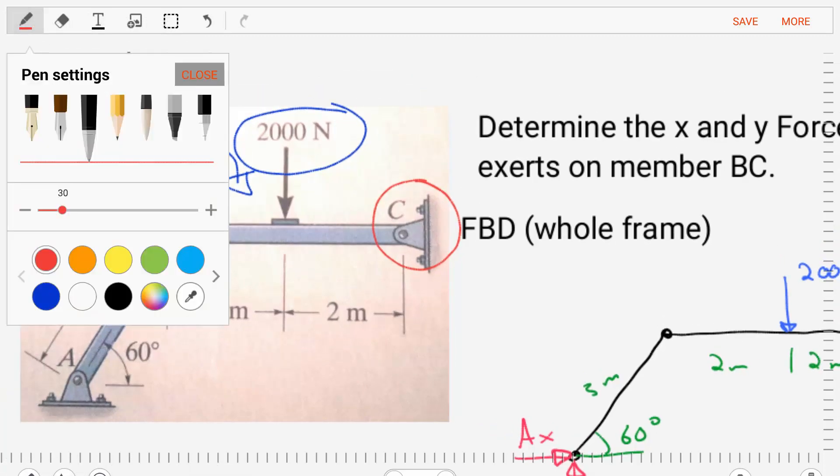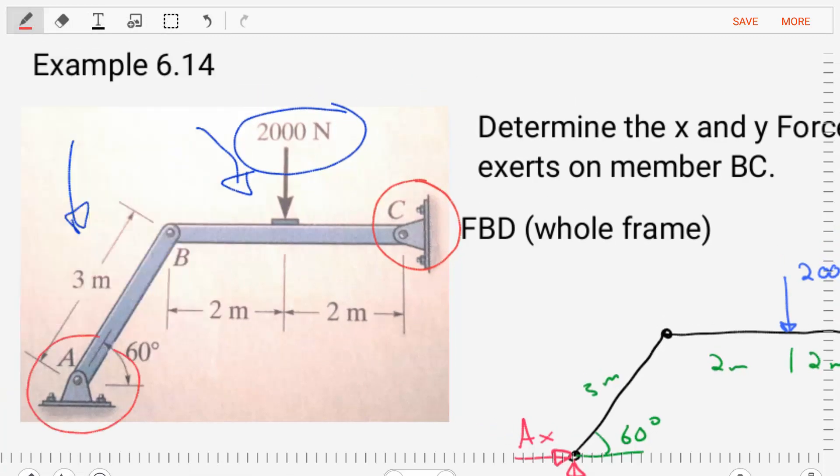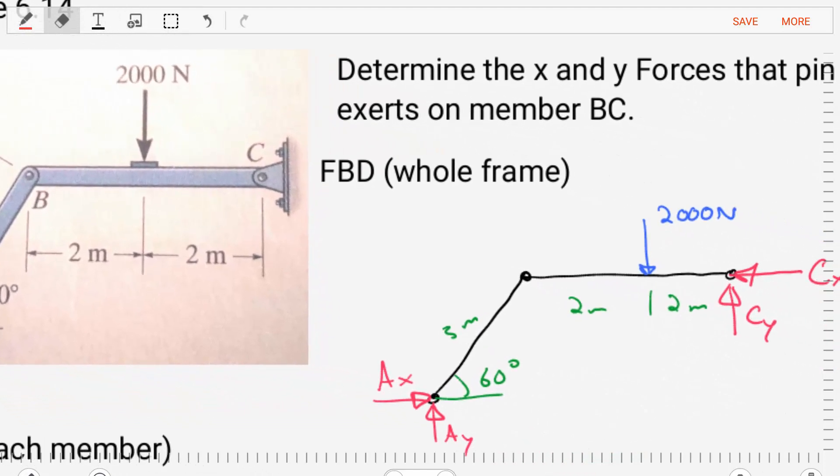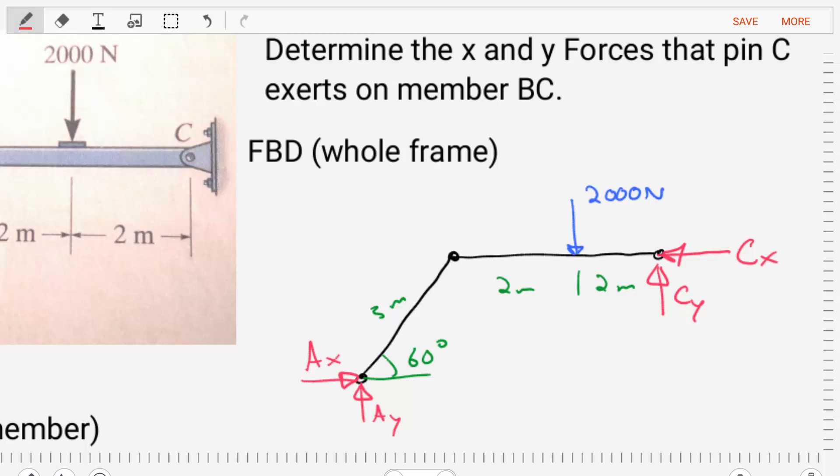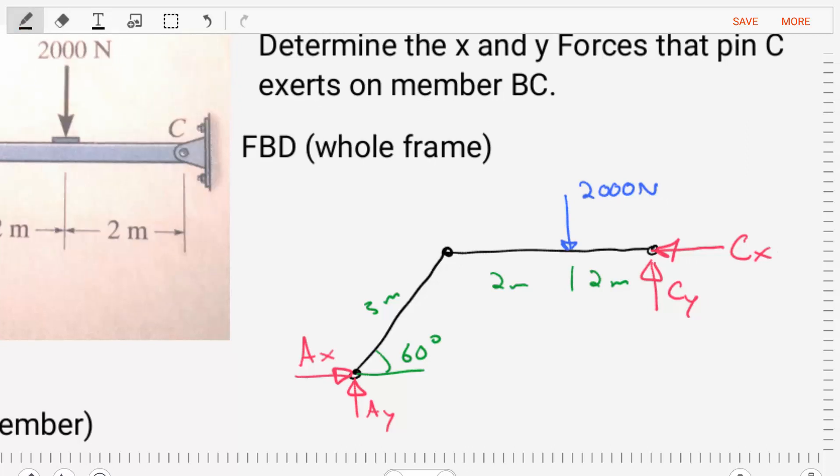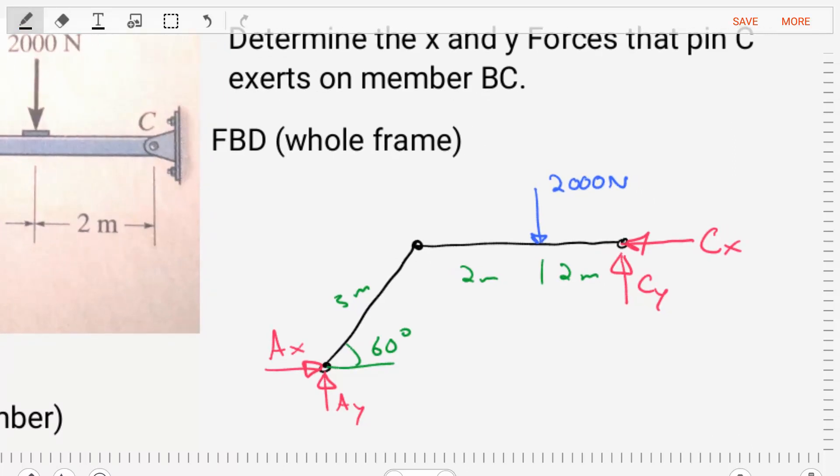Now let's also note that at point A in our member AB, we also have a pin connection that is going to give us some reactions. Now if we were to take this entire structure and craft a free body diagram, we would end up with the following, where we replace those pin connections at A and C with the reactions AX, AY, CX, and CY.